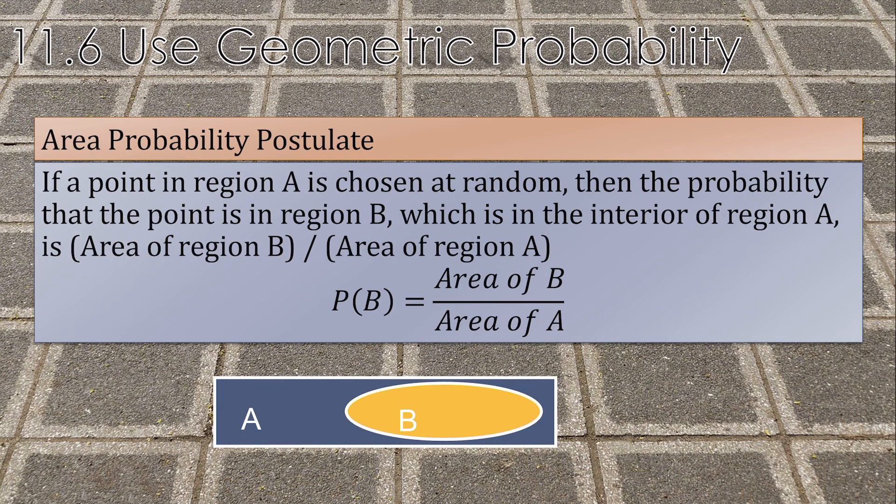The area probability postulate is similar. If a point in region A is chosen at random, then the probability that a point is in region B, which is in the interior of A, is the area of B over the area of A. So if we want B, it would be the area of all of B divided by the area of A.